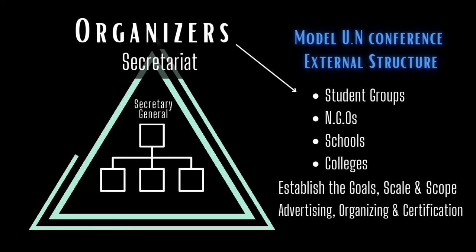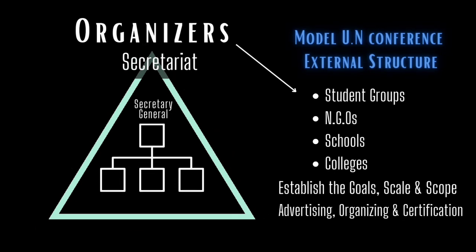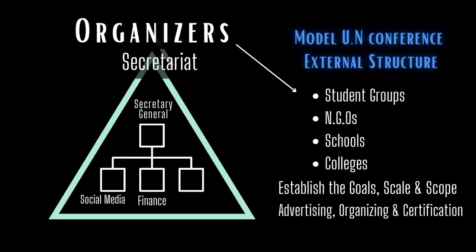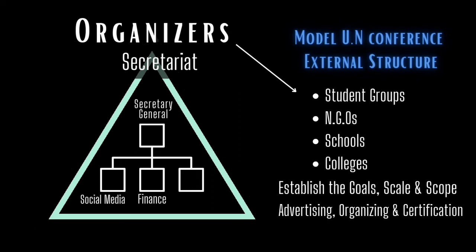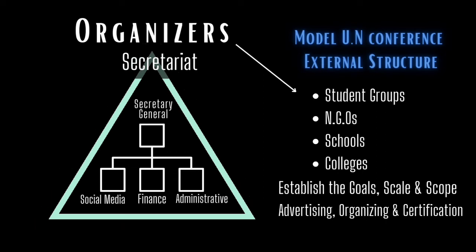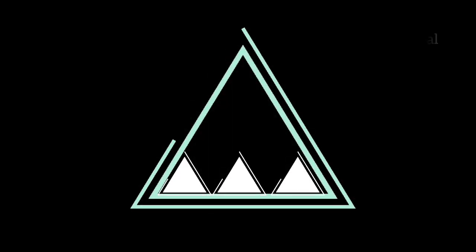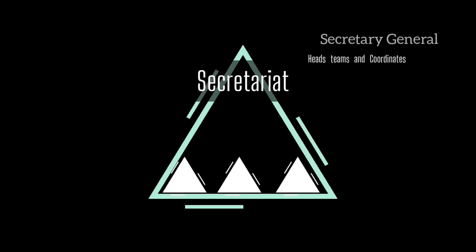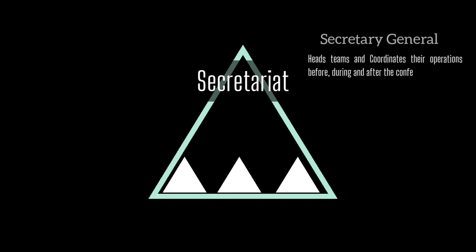The secretariat has a few important roles and responsibilities divided among its selected members. It has a social media team which takes care of promotion and advertising aspects of the conference. Secondly, they have a finance team that focuses on allocation of money to the advertising team, collecting delegate fees, and providing direct remuneration and delegate cash rewards. Thirdly, they have an administrative team that takes care of delegate registration, grievance handling, and overall registration of committee directors and international press members. The secretary general, who is generally an experienced Model UN participant, heads these teams and coordinates operations before, during, and after the conference.